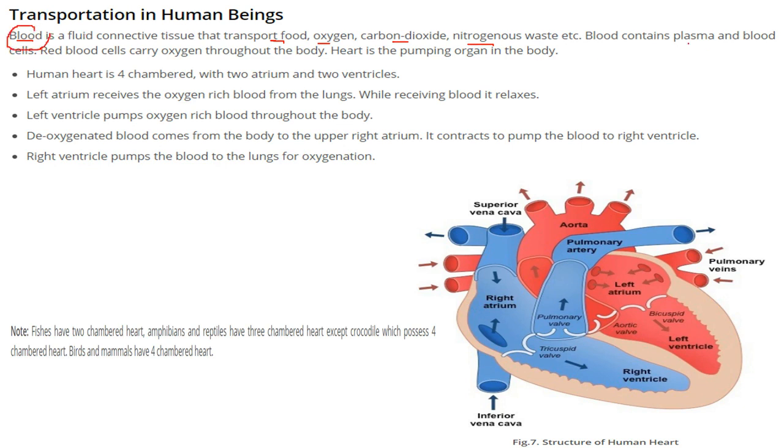Blood contains plasma and blood cells. Red blood cells carry oxygen throughout the body. The heart is the pumping organ in the body.